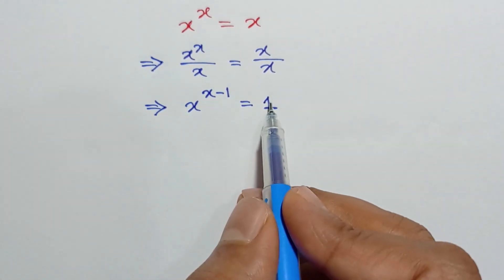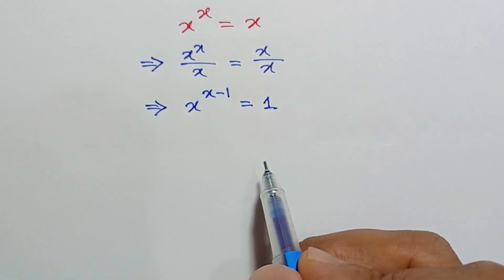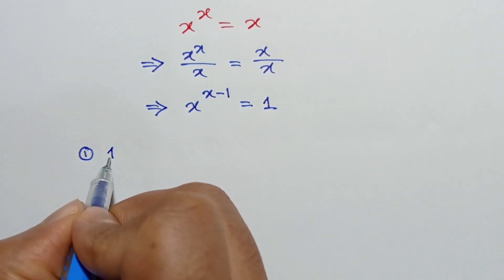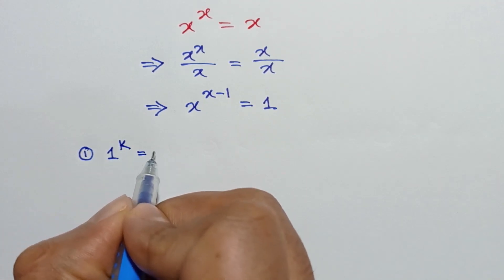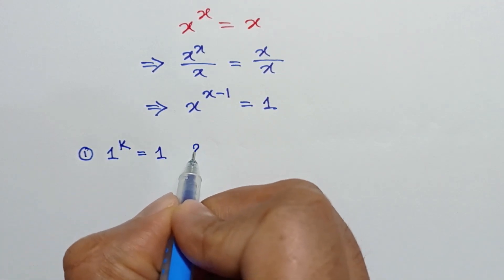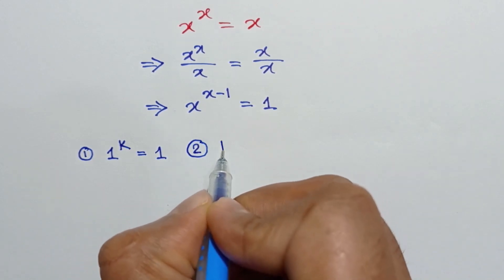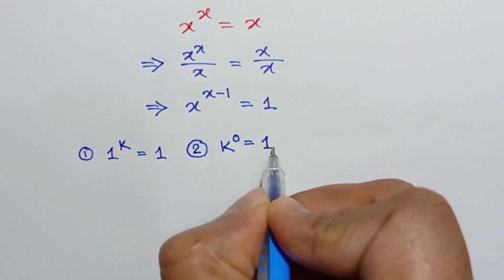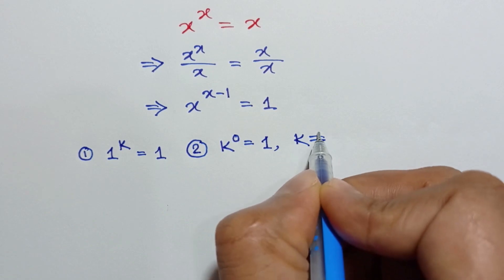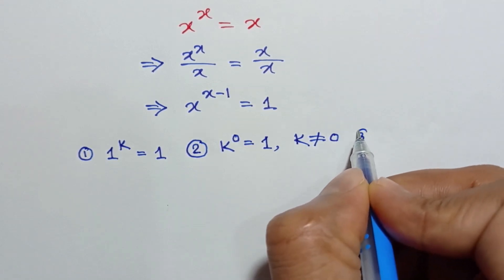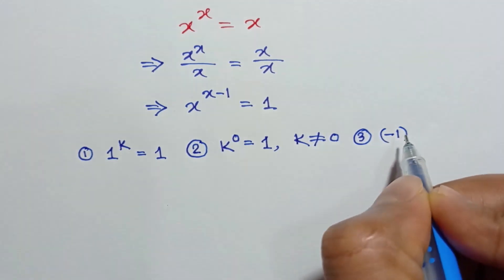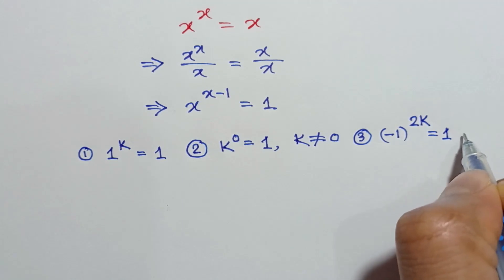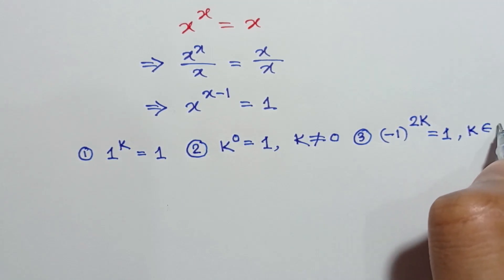So this can occur in three cases. Case one: 1 to the power k is equal to 1. Case two: k to the power 0 is equal to 1, where k is not equal to 0. And case three: negative 1 to the power 2k is equal to 1, where k belongs to the integers.